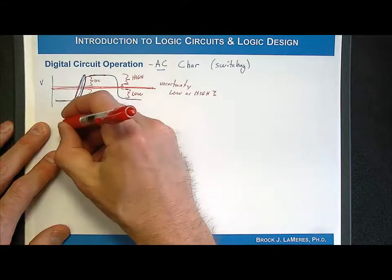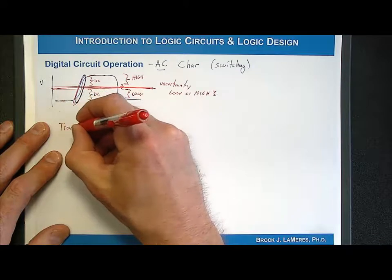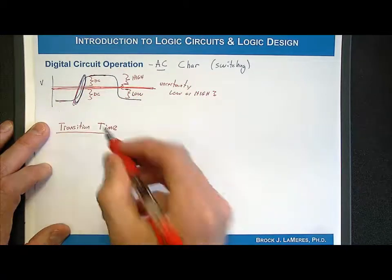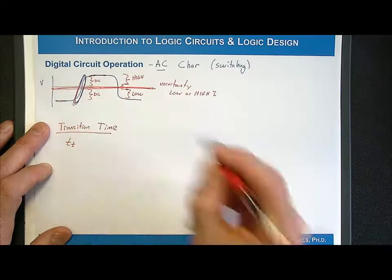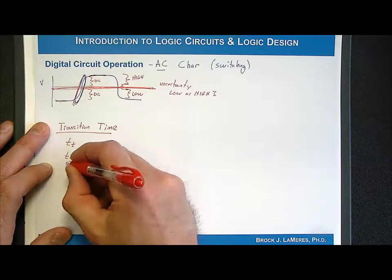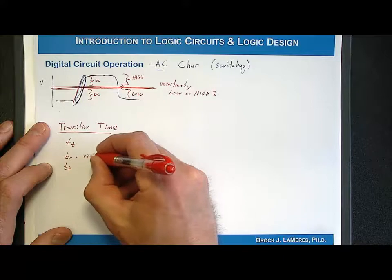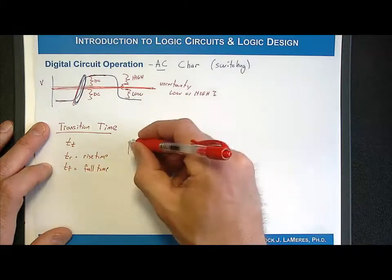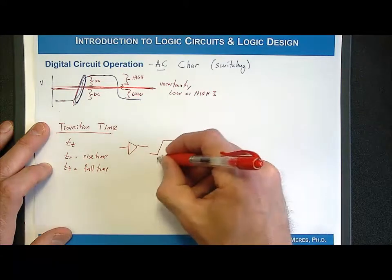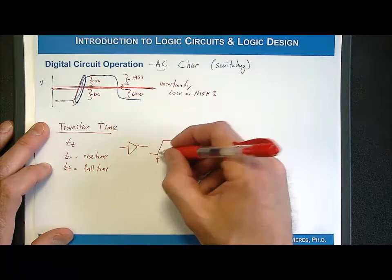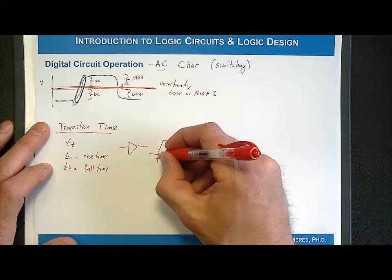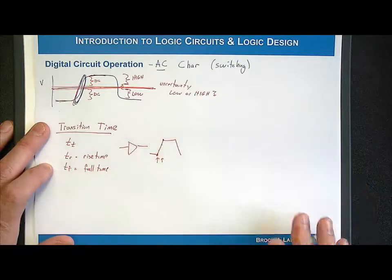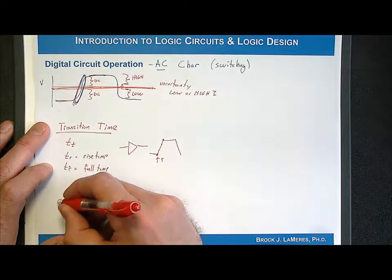The first thing we'll talk about is the transition time — TT. It's made up of two components: TR, the rise time, and TF, the fall time. This represents, if you had a circuit and the output is switching between a low to a high and a high to a low, how fast does it move. We need to define where we're measuring the time from. The transition time is defined as the 10% to 90% level, and it's always measured on the output.